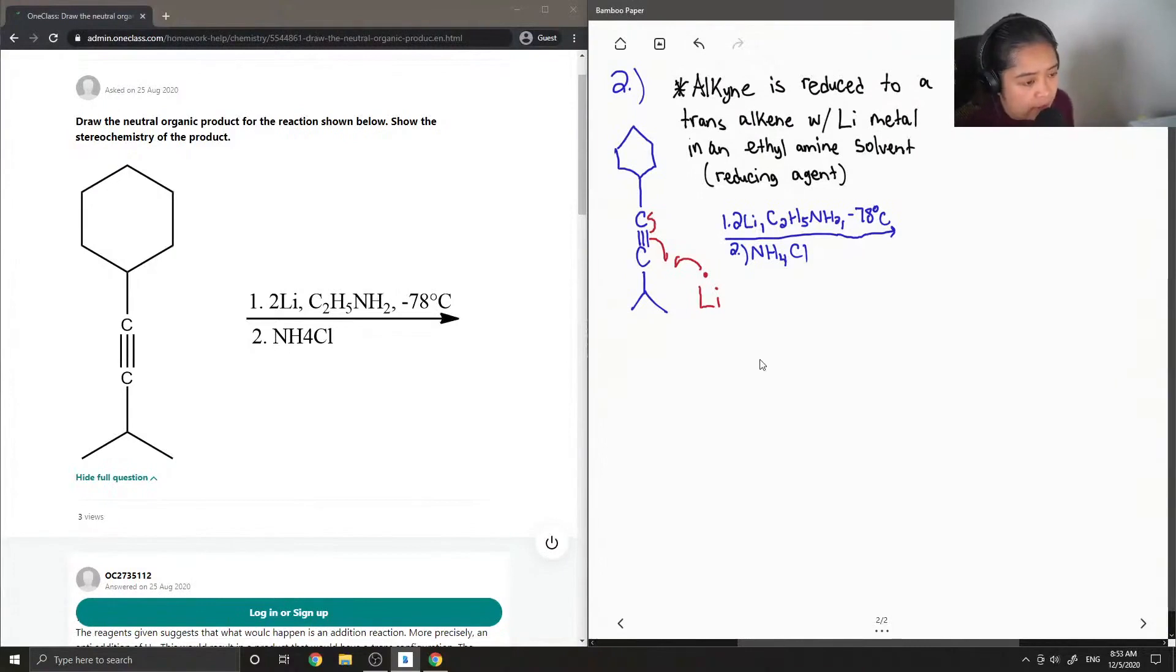So notice these are half arrows, which indicates that only one electron is being transferred. So in the first step, lithium has a single electron, a single valence electron in its valence shell, and it can readily donate to the alkyne to form a radical intermediate.